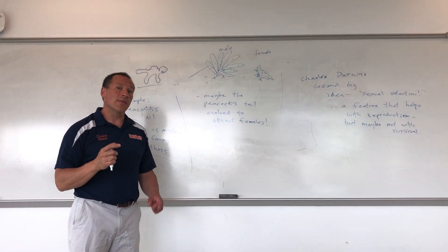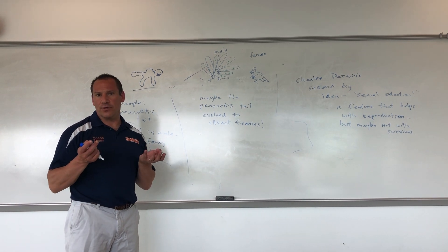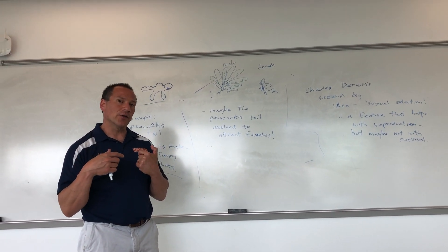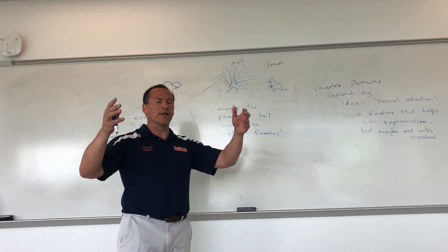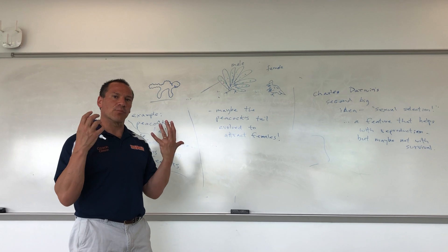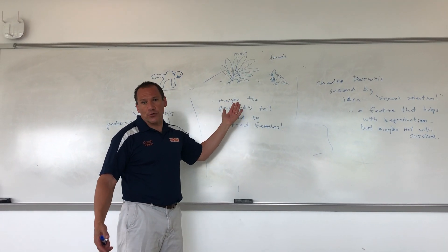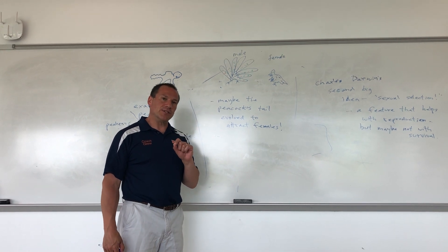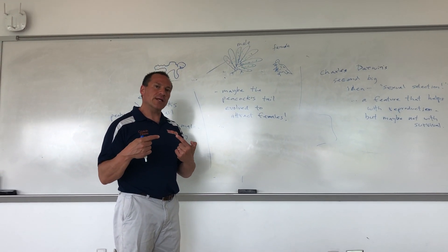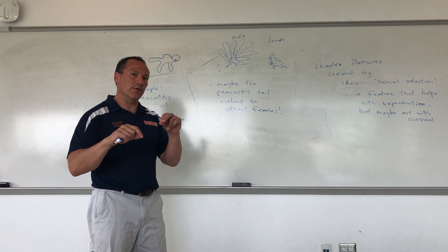It turns out Darwin was absolutely correct, and this is true in many bird species. Here in the United States, for example, the male cardinal is a bright, beautiful red, while the female has a little red but is mostly tan or brown. In lots of bird species the male is very colorful compared to the female, and that usually means the bright colors in males evolved because females are more likely to select brightly colored males as mates.